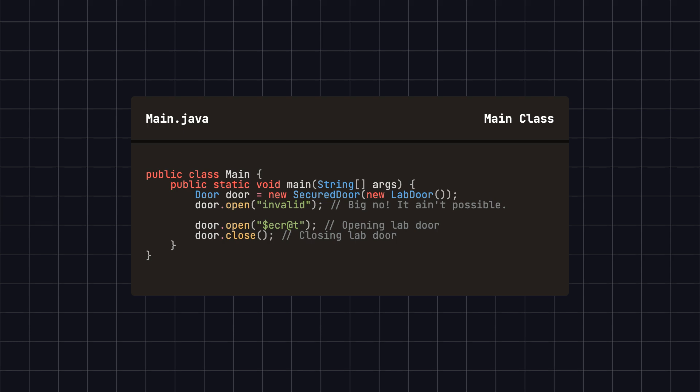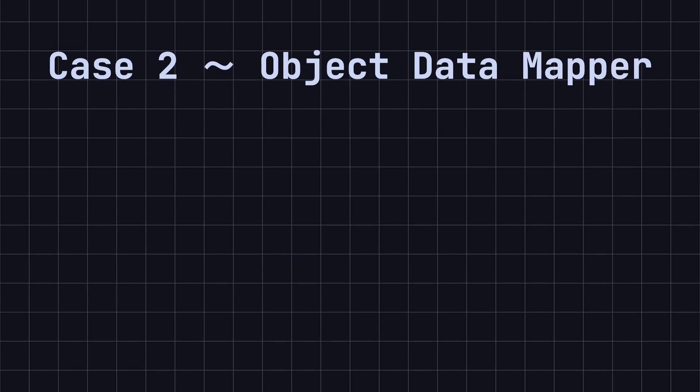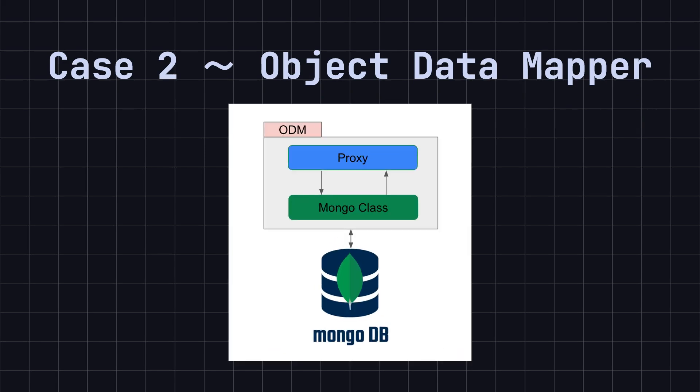This pattern offers a flexible and secure way to manage access to objects. The proxy pattern can be used not only for the SecurityDoor example, but also for implementing data mappers. For example, I recently used this pattern to write an object data mapper, ODM, for MongoDB.